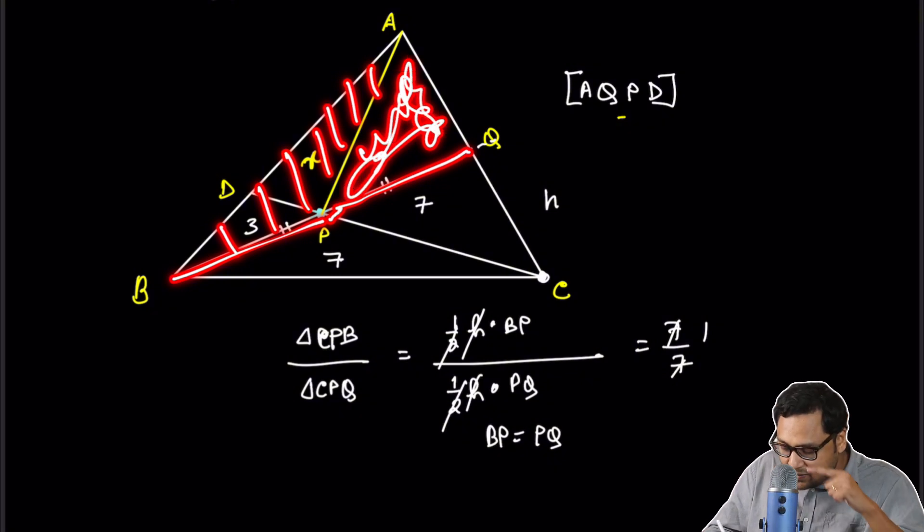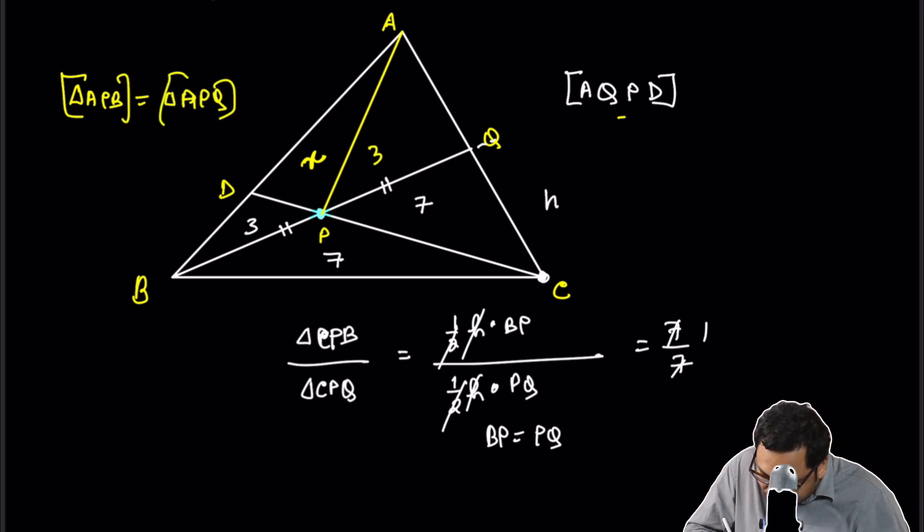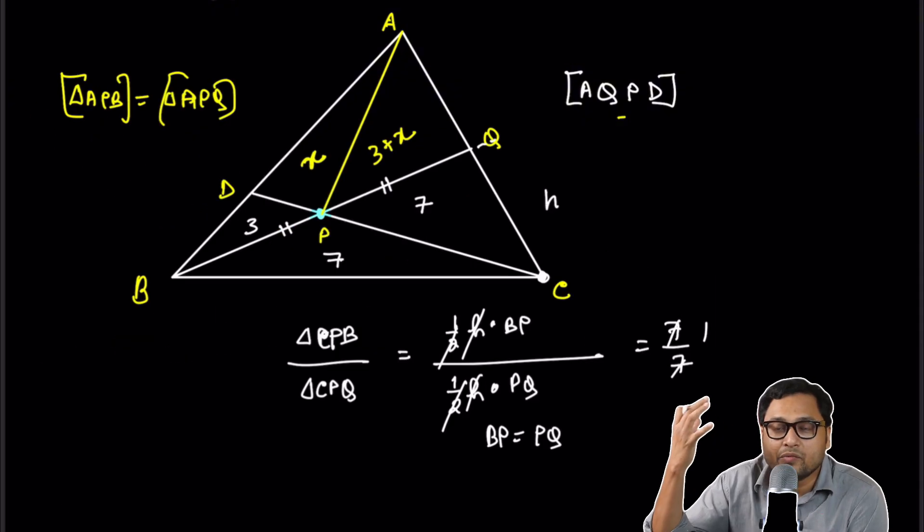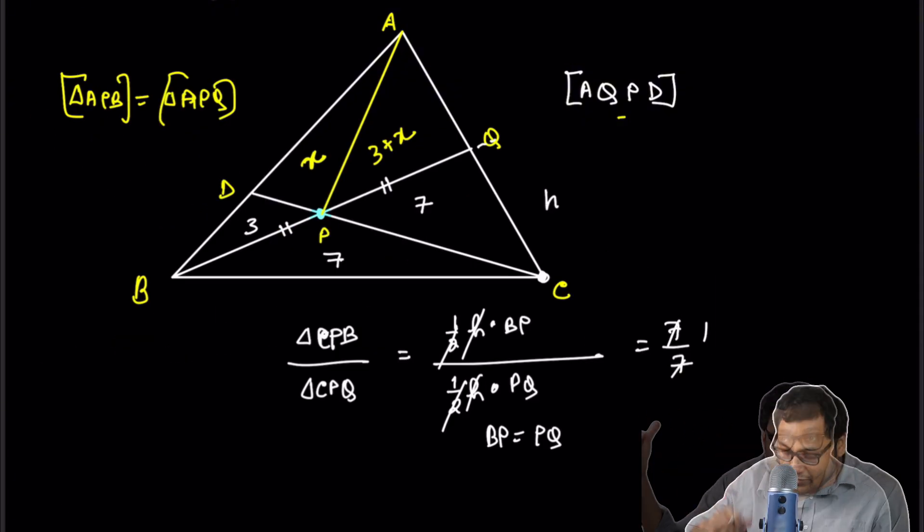BP is equal to QP. So this area will be equal to this area. APB will be equal to APQ. The areas will be equal. So this part is 3 plus X. Now we are actually ready to completely solve the problem.